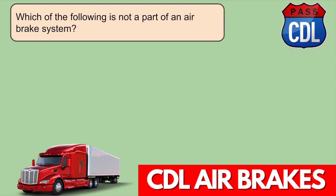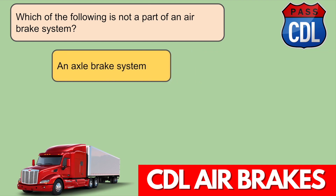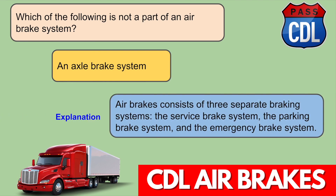Which of the following is not a part of an air brake system? An axle brake system. Air brakes consist of three separate braking systems: the service brake system, the parking brake system, and the emergency brake system.